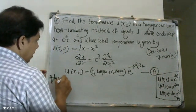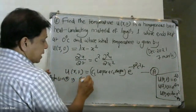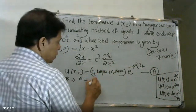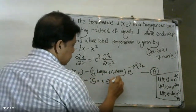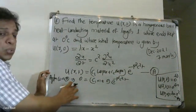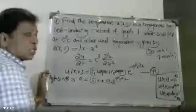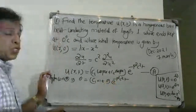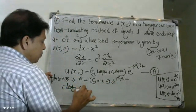Apply condition one: u(0,t) = 0. Substituting x=0, we get c1·cos(0) + c2·sin(0) into e^(−p²c²t) equals 0. The right hand side is 0, and since e^(−p²c²t) is not zero, c1·1 + 0 = 0. Clearly, c1 = 0.